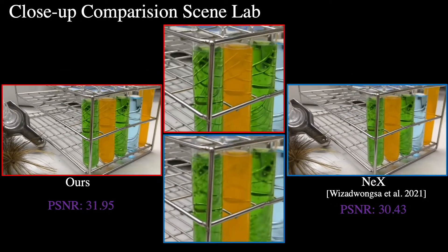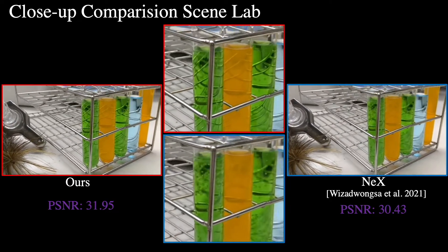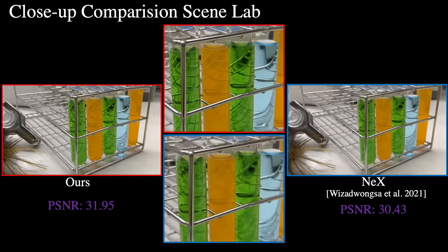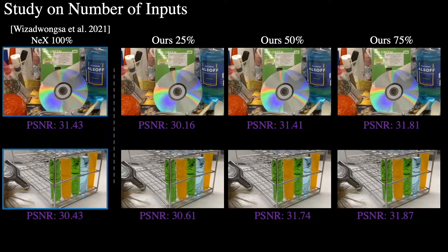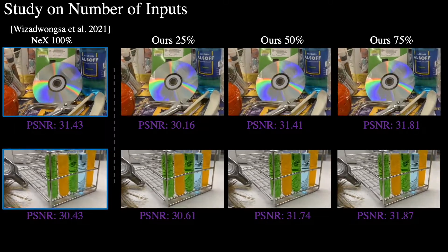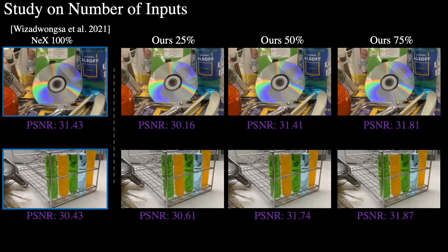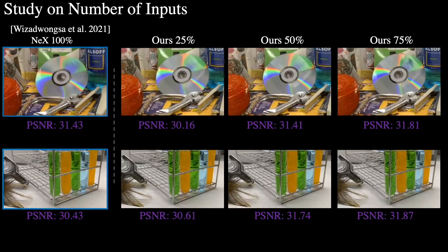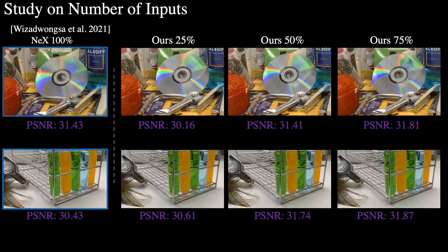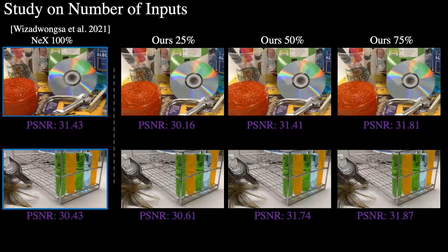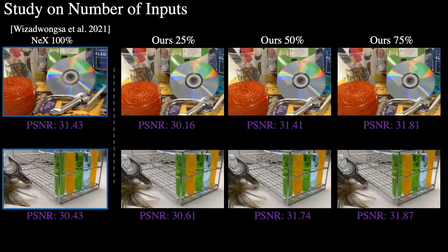In the lab scene, our method successfully captures the refraction through the test tubes while NeX fails in this situation. To understand how the number of input views affects the novel view synthesis result, we train our model on fewer images. We use 75%, 50%, and 25% of the original data for the experiment. Although the input images are dramatically decreased, our method still generates high-quality results. Note that even with fewer input images for CD and lab scenes, our results are still comparable with or even better than NeX with the full number of inputs in the above challenging scenes.